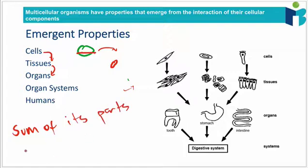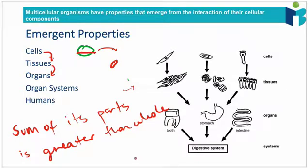This is what we call emergent properties — the sum of its parts is greater than the whole, as Aristotle said. You can think of it like a car: the engine on its own will not be able to get someone from France to Germany. We need the tires, the engine, the hull of the car itself — all the different parts acting together to create this overarching function. These are emergent properties: new properties that happen through interactions.